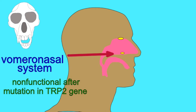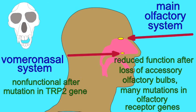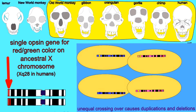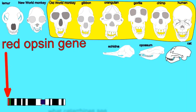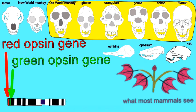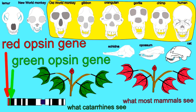In catarrhine primates, genetic mutations inactivated the vomeronasal system and reduced the function of the main olfactory system, and olfactory areas decreased in size in the catarrhine cerebrum. A gene duplication on the X chromosome then allowed for color vision in catarrhine primates, and visual areas of the cerebrum increased.